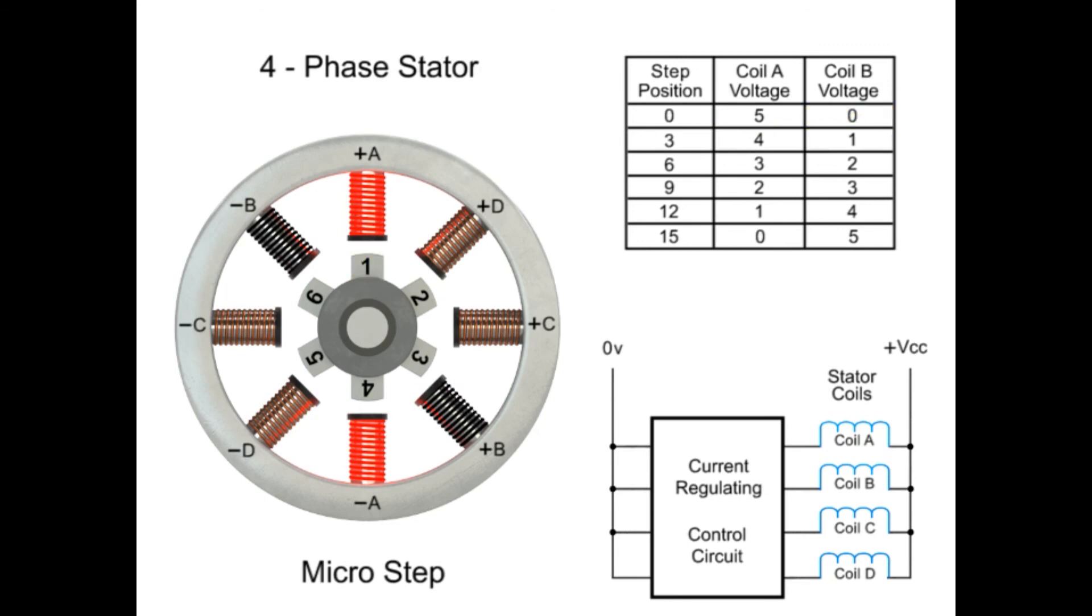Reducing the voltage to coil A, and increasing voltage to coil B, the rotor will begin to rotate in a clockwise direction, and continue until the voltage is 0 at coil A, and 5 at coil B.